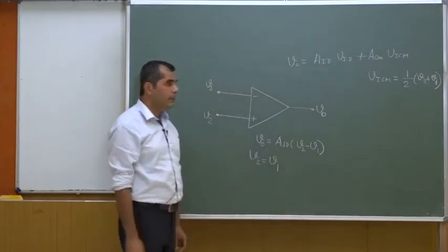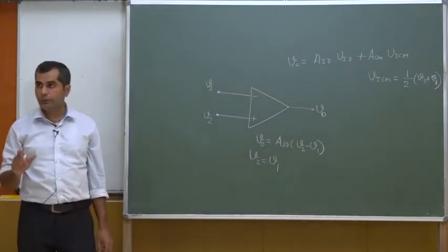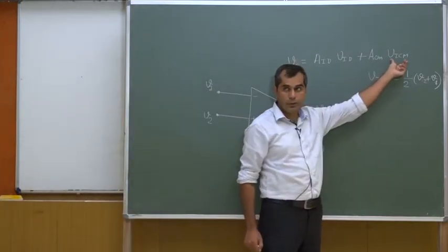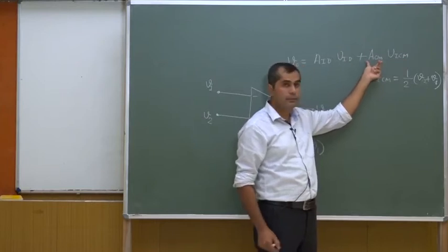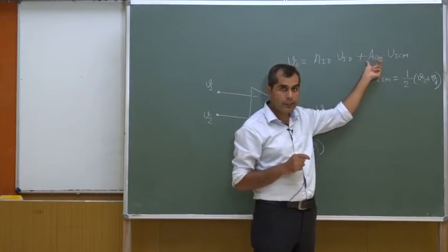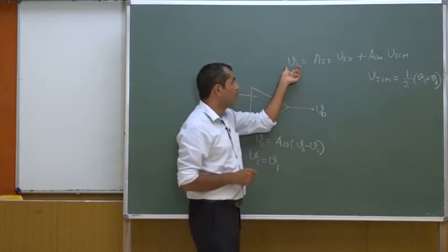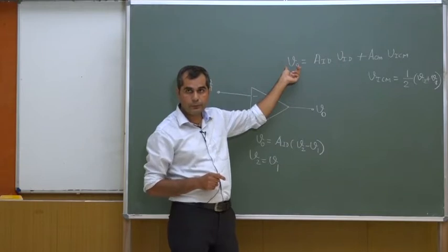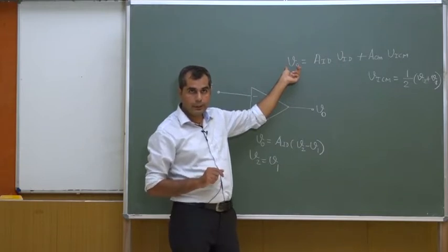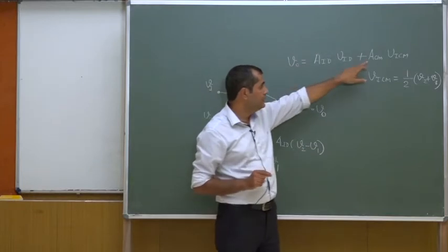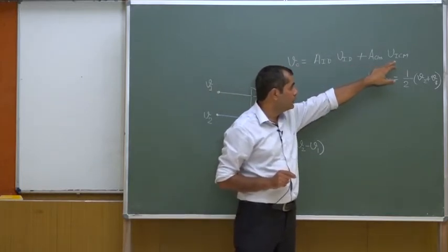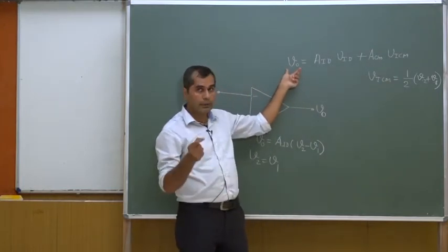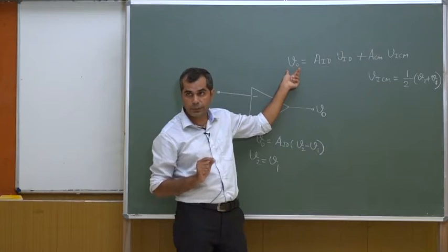Now you can see that even if V_id is 0 (because V2 equals V1), V_icm remains non-zero. Although A_icm is very small, you will still have an output voltage V_out. It is because of the common mode gain A_cm and the common mode input signal present at the two input terminals that there will be some output at pin 6 of the operational amplifier.